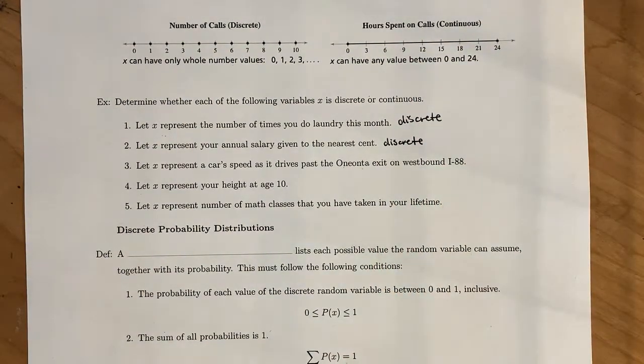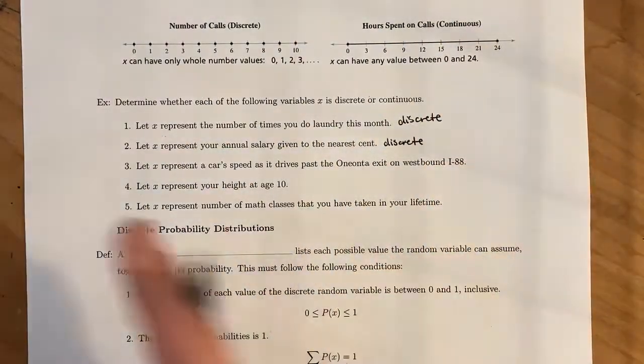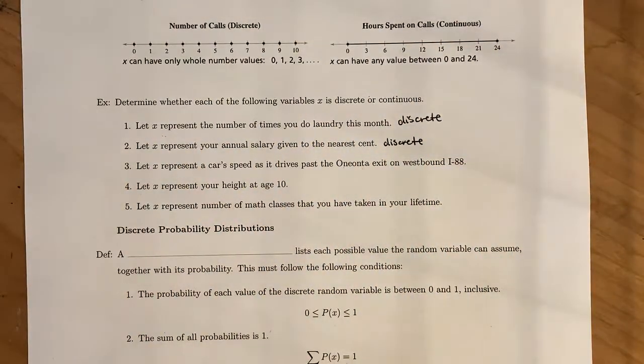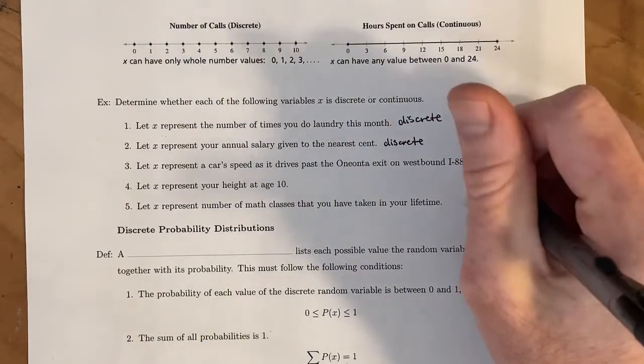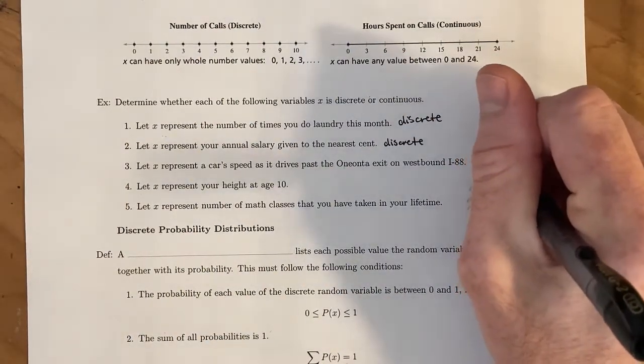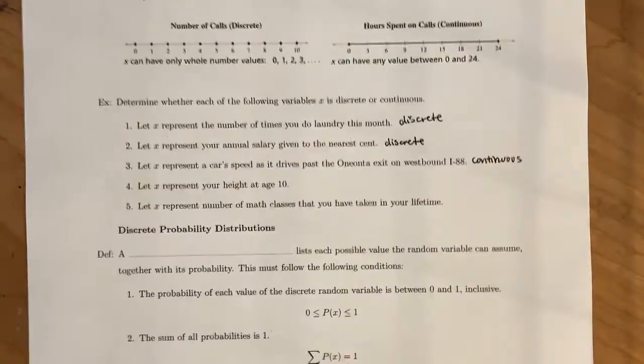Now let x represent a car's speed as it drives past the Oneonta exit on westbound I-88. Well, you could be going from really, really, really slow to really, really, really fast and anything in between. And so there's going to be a whole interval worth of values that a car's speed could land in. That leaves this to be a continuous random variable.